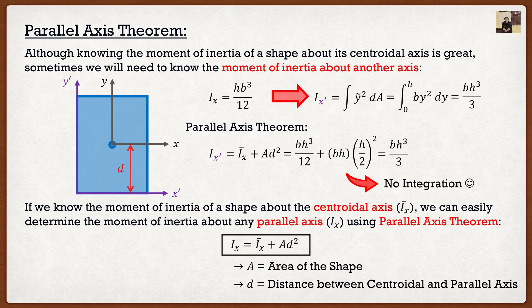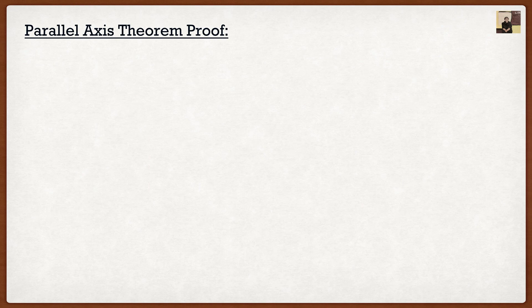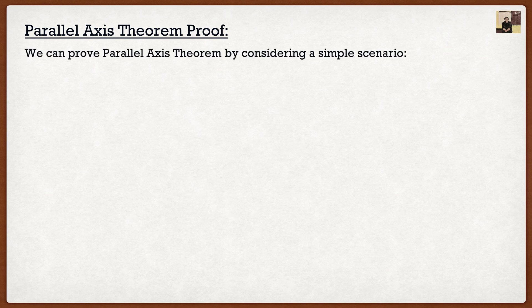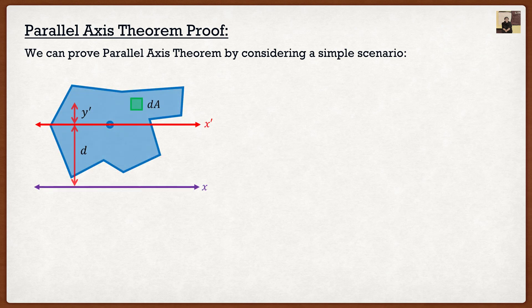We are going to do an example of this later in the lecture video. Some students want to know how exactly this is true — can we show a proof? Well, of course. We can actually prove parallel axis theorem by considering a simple scenario. Let's say we have a random shape — it kind of looks like a deformed Pac-Man — and it has a centroidal axis x prime and we want the moment of inertia about a parallel axis x. We know the formula for the moment of inertia is the integral of y-tilde squared dA.